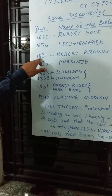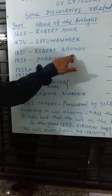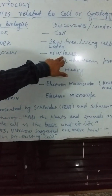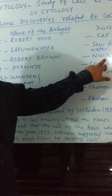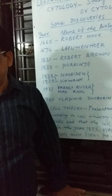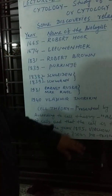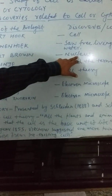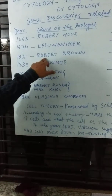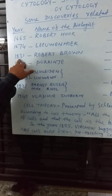The next important year is 1831. Robert Brown discovered the nucleus. Inside the cell, a centrally located structure is present which controls all the activity of the cell — that is called the nucleus. It was first time observed in the year 1831.